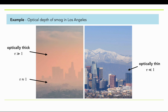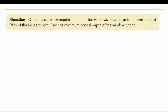Here's a simple question to ponder. California state law requires the front side windows on your car to transmit at least 70% of the incident light. Find the maximum optical depth of your window tinting. You just use the previous definition I = I₀ · e^(−τ) and plug in values to solve for τ.